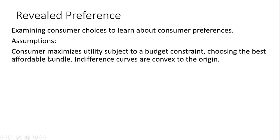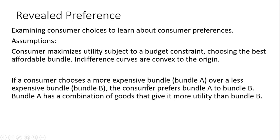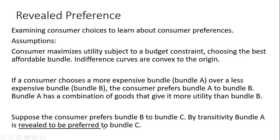Here are some main assumptions. The consumer maximizes utility subject to a budget constraint, choosing the best affordable bundle. Indifference curves are convex to the origin. If a consumer chooses a more expensive bundle, say bundle A, over a less expensive bundle B, the consumer prefers bundle A to bundle B. Bundle A has a combination of goods that give it more utility than bundle B. Suppose the consumer prefers bundle B to bundle C — by transitivity, bundle A is revealed to be preferred to bundle C.